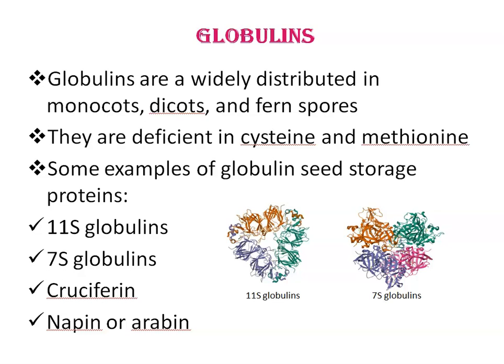7S globulins, also known as vicilins, are made up of three subunits typically about 50 kDa. You can see here the structure of 11S globulins and 7S globulins. Cruciferin is the name for 12S globulin proteins in Arabidopsis, and napins are the name for 2S albumins in Arabidopsis. Usually these proteins are removed by milling in wheat, polishing in the case of rice, boiling in the case of barley, or decortication before human consumption.